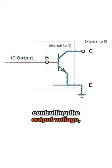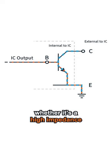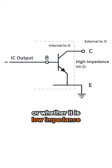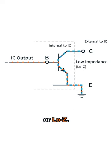Instead of directly controlling the output voltage, you're controlling whether it's a high impedance, sometimes referred to as high Z, or whether it is low impedance or low Z.